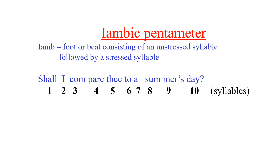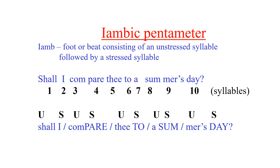The line 'Shall I compare thee to a summer's day' has 10 syllables divided into five iambs, each consisting of an unstressed syllable followed by a stressed syllable: shall-I, com-PARE, thee-TO, a-SUM, mer's-DAY. Because there are five iambs, it is called pentameter — hence the term iambic pentameter.